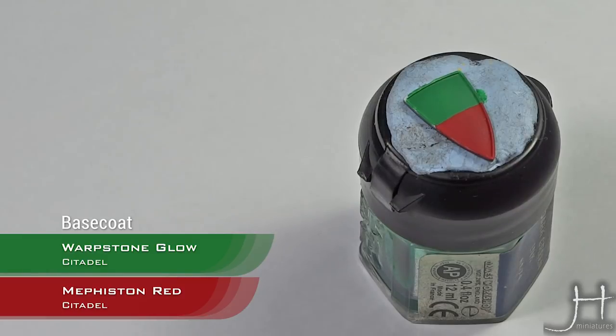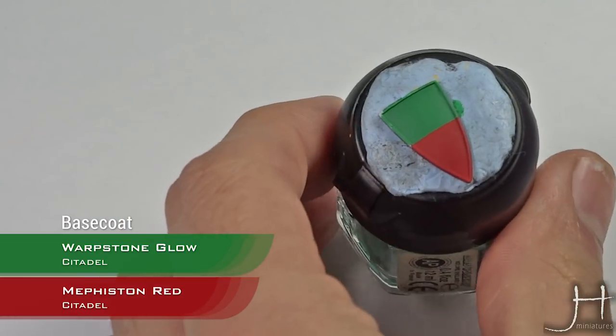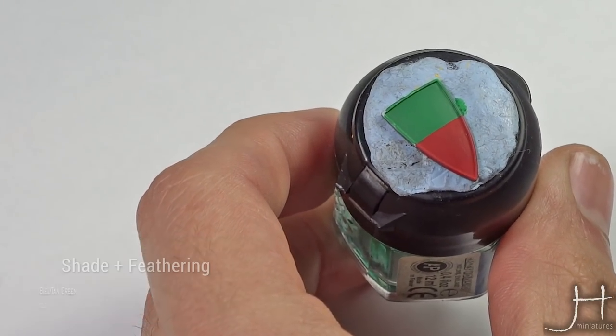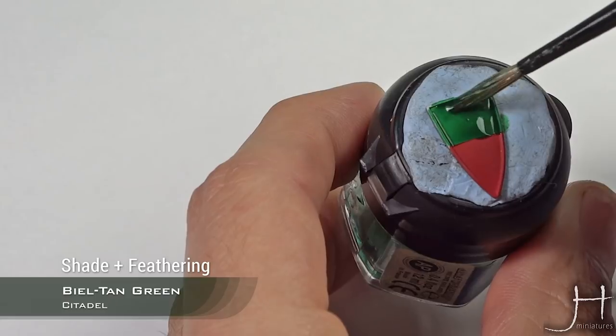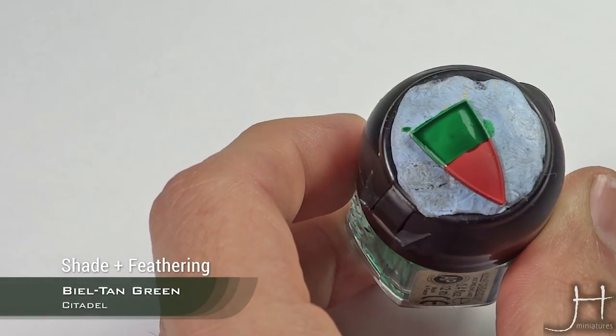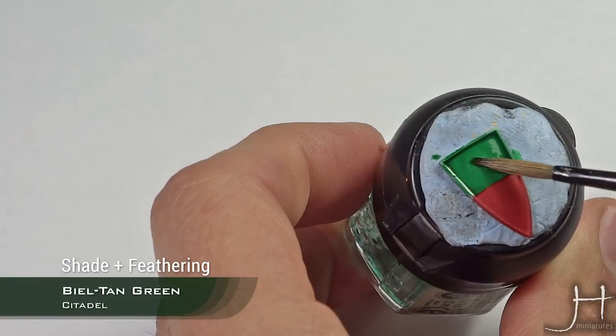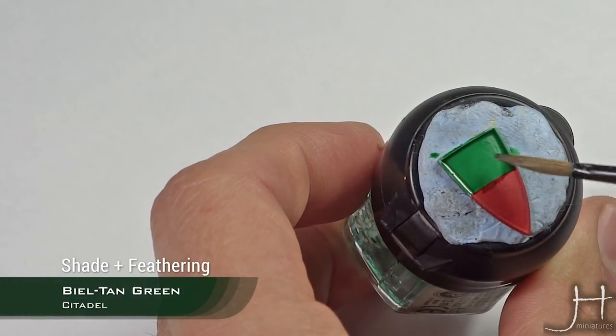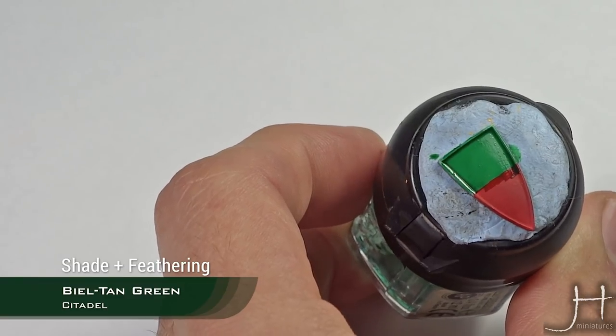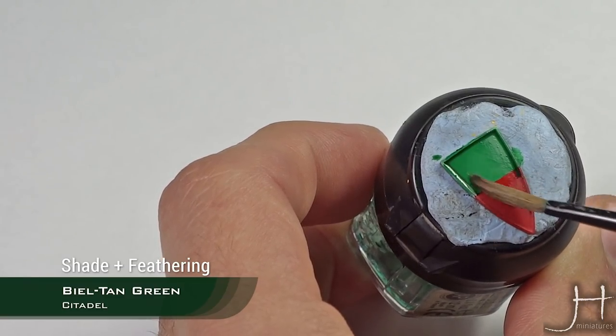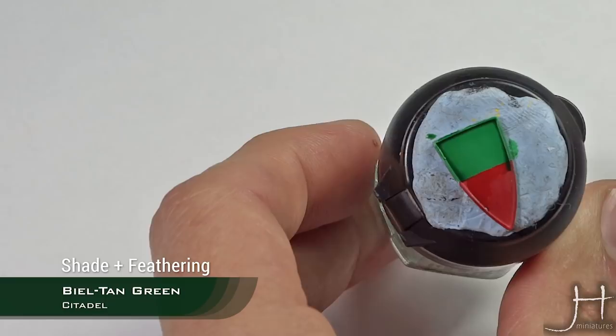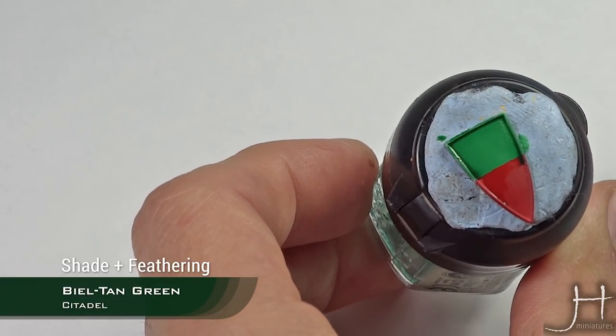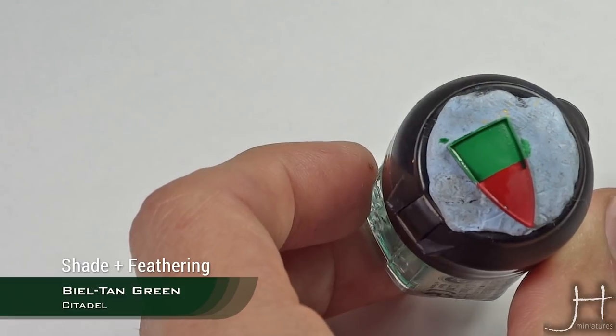Let's start with the green. We will apply a wash of Biel-tan Green all over the piece. It's very simple, just wash and dilute it. Apply the wash, don't care too much about the red. Once the wash is applied, I like to clean up the center a bit to feather it out. Just leave your brush in the water, wipe the edges off, and that's it. We will let this dry and apply a second coat to reinforce the shadows on the edges.